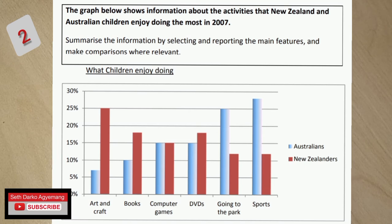The question asks you to summarize the information by selecting and reporting the main features, and make comparisons where necessary. Keep that in mind — you have to report the main features and make comparisons where necessary. They want to see if you can observe and report well on the diagram and make the necessary comparisons. These are the two things you must keep in mind. Now I'm going to show you how to write the introduction.